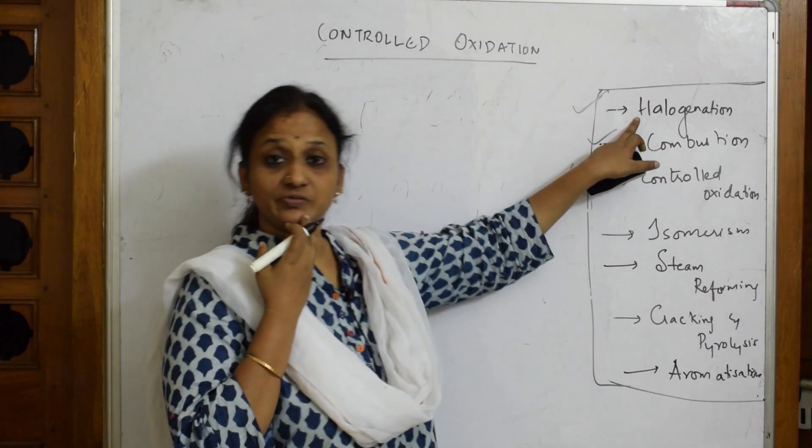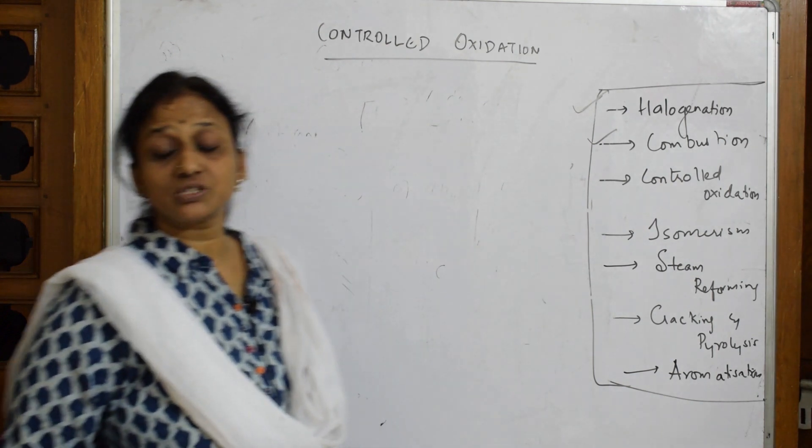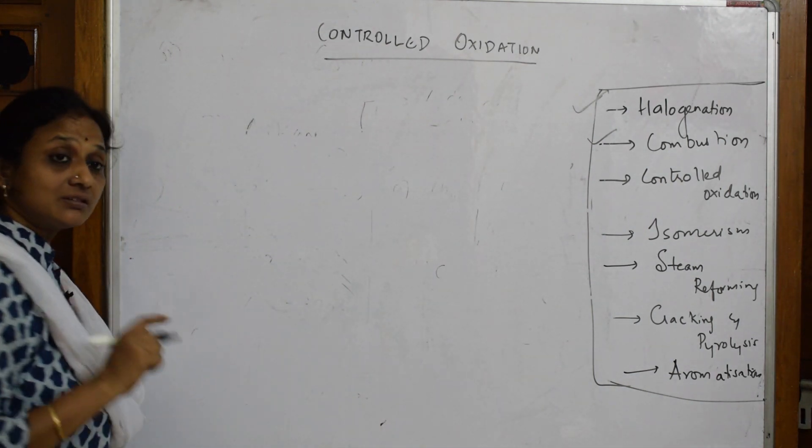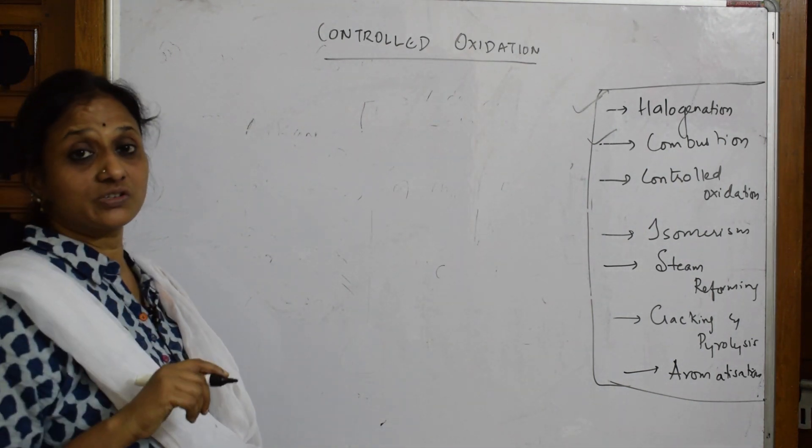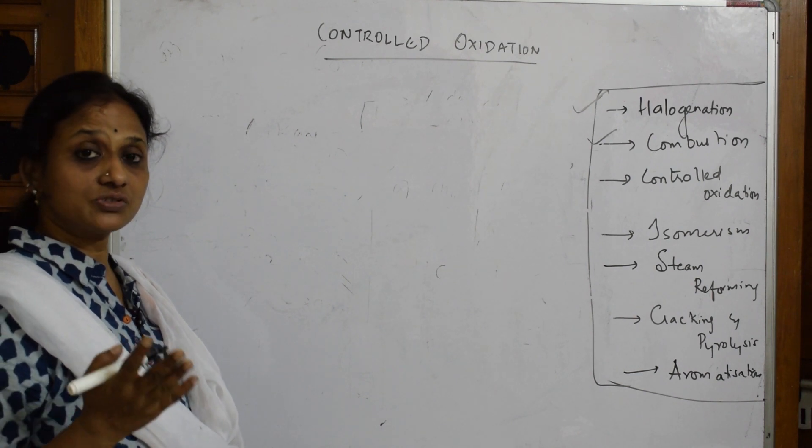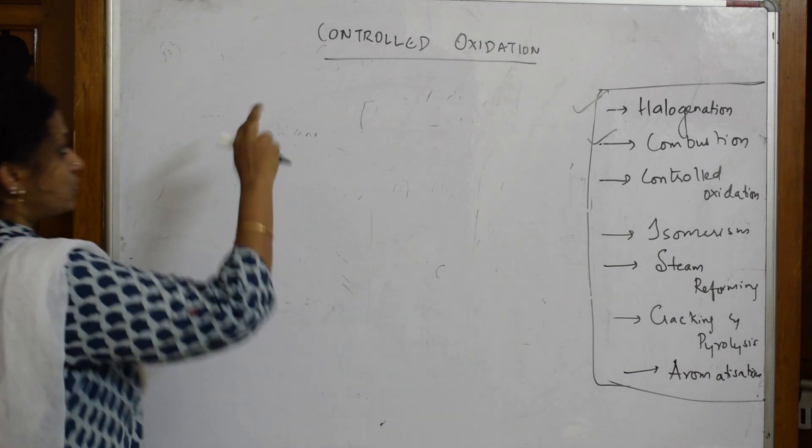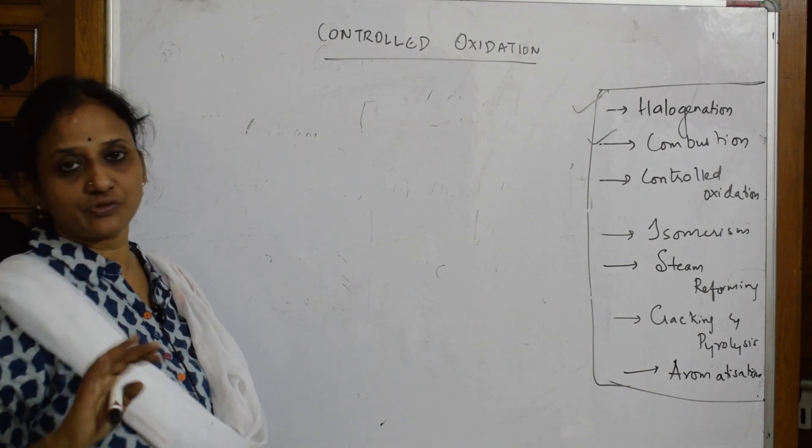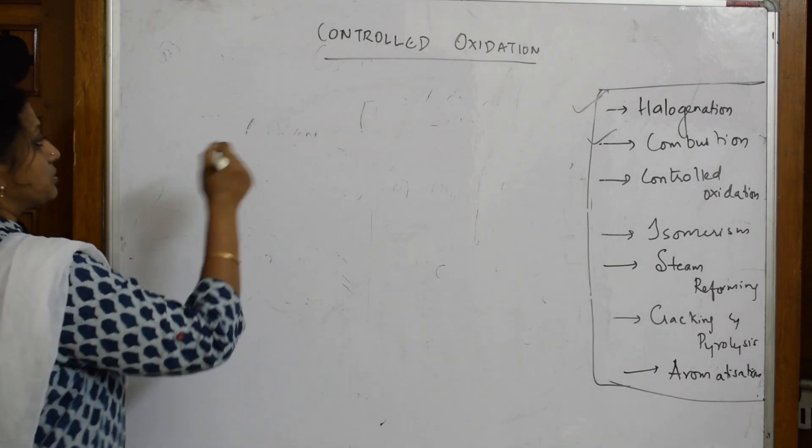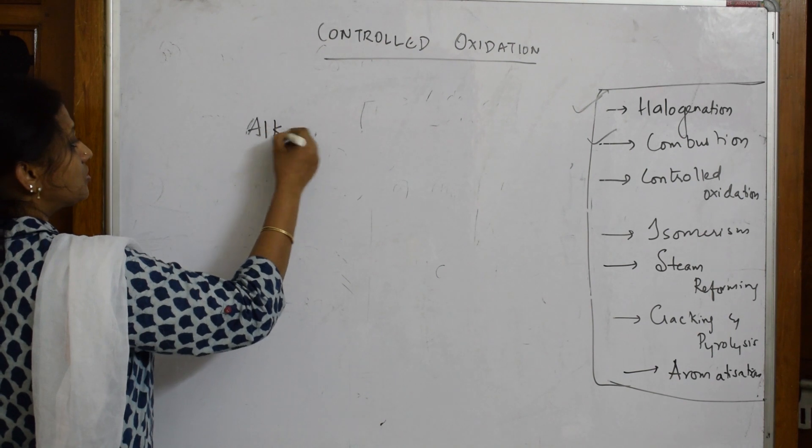We have already seen halogenation and combustion reaction. Let us come back to oxidation reaction. Here there is one important thing - controlled oxidation. We are going to add oxygen with limited supply of air. Oxidation means addition of oxygen. When we do controlled oxidation...